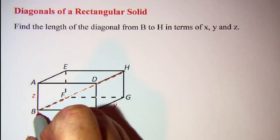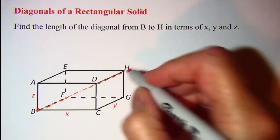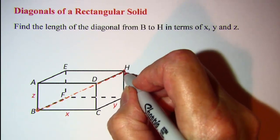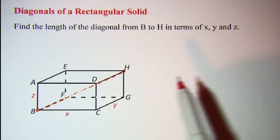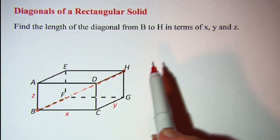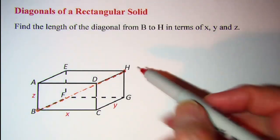So point B is right here and point H is right here. So the diagonal goes from here to here. Now the first thing that we'll want to do is look at